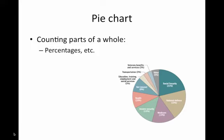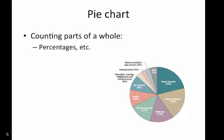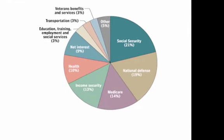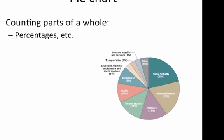If you're going to use a pie chart, you're going to be counting parts of a whole. If you have one whole thing and you are counting the parts of that whole thing, each of those parts will fill a certain part of your pie graph. For instance, on the screen right now you can see a graph of national spending. In the United States, 21% of government spending goes towards Social Security, whereas 9% goes to interest paid on what we owe. If you were counting parts of a whole, you would use a pie chart.